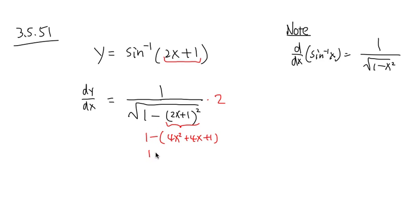In other words, this is the same as 1 minus 4x squared minus 4x, and then minus 1. And then, here we have the 1 and 1 cancels. This 1 and this 1 cancels. Let me just show you with a different color. So cancel this 1 and that 1.